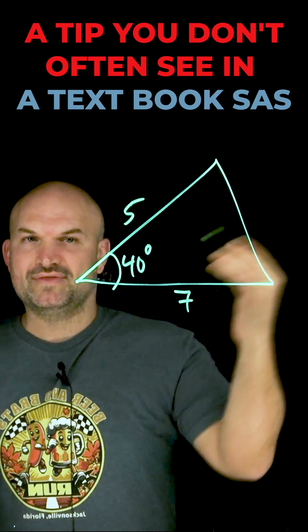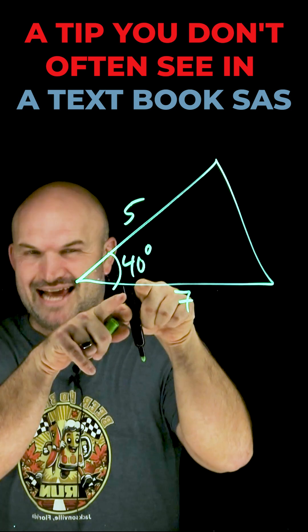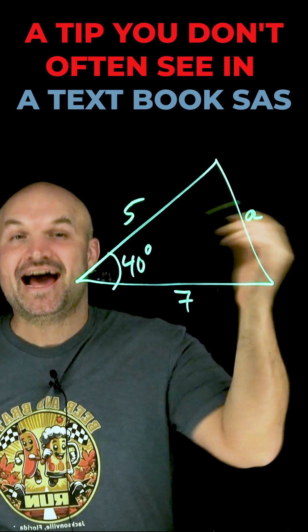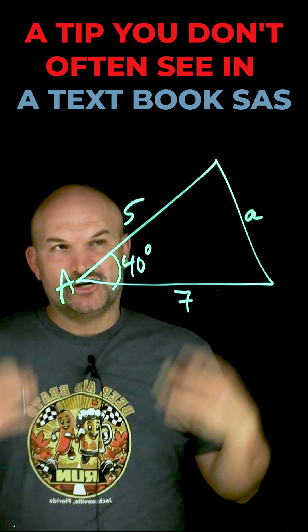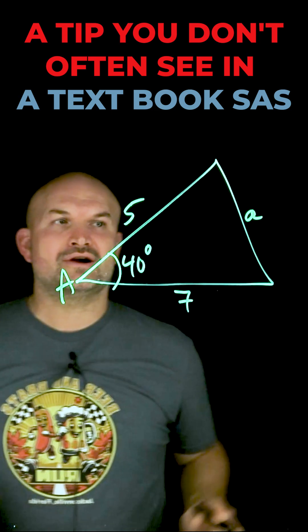Well obviously there's only one thing that we can solve for. Whenever you're given an angle, that is going to be your opposing side length that you're going to have to be able to solve. So that's not the tip, that should be hopefully obvious. So you're going to use the law of cosines to figure out our A.